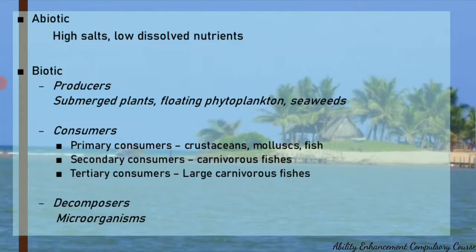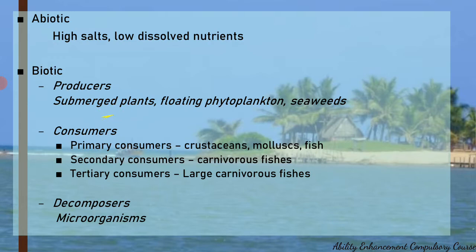The key abiotic factor in the marine water ecosystem is high salt concentration. Dissolved nutrients are very low, and light penetration and pressure are also important abiotic factors. The biotic factors include producers, mainly phytoplankton. Diatoms are the major phytoplankton in marine water ecosystems. There are also several seaweeds, which may be floating or benthic (found on the ocean floor), as well as submerged plants.